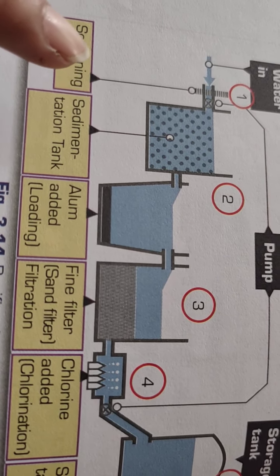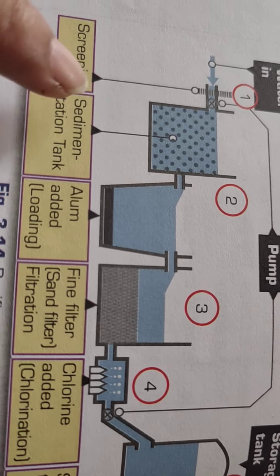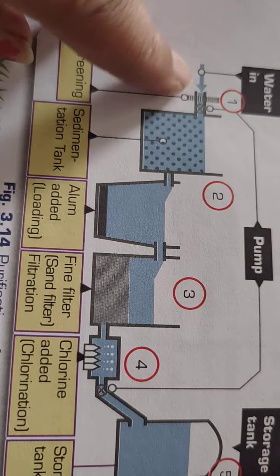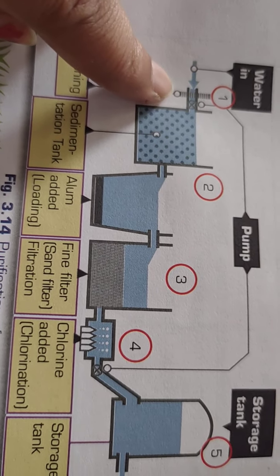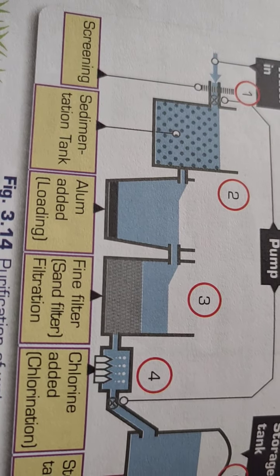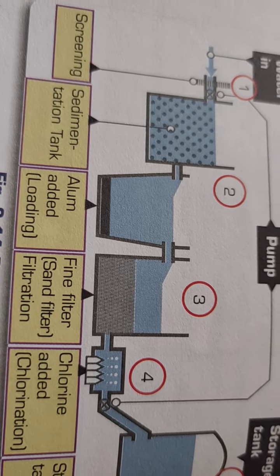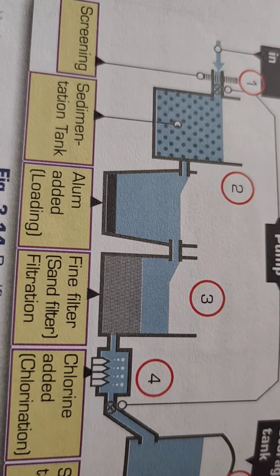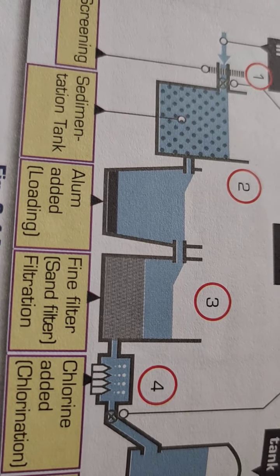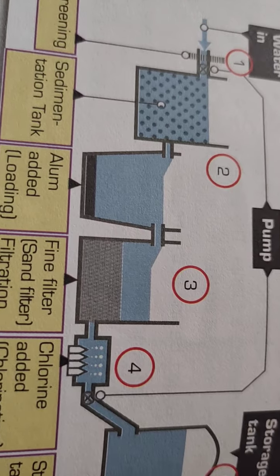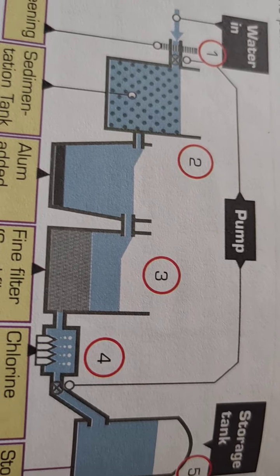In screening, the water is allowed to pass through a big screen of wire net, which removes the impurities — like insects or pebbles — that are present in the water. So this step removes the solid and bigger impurities.